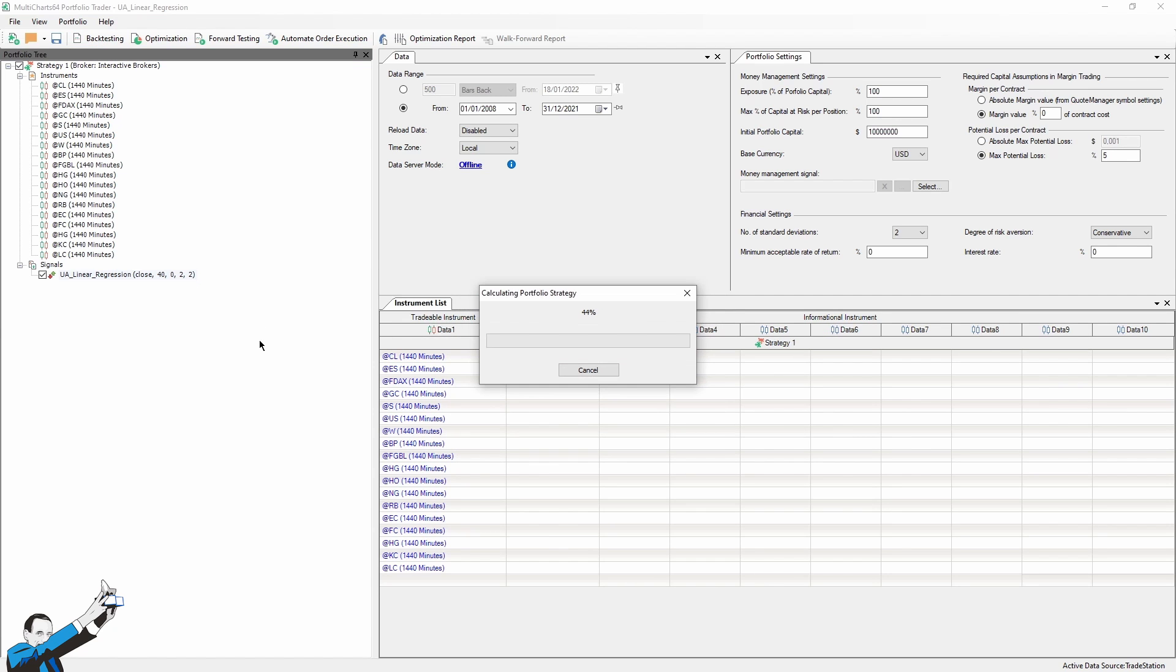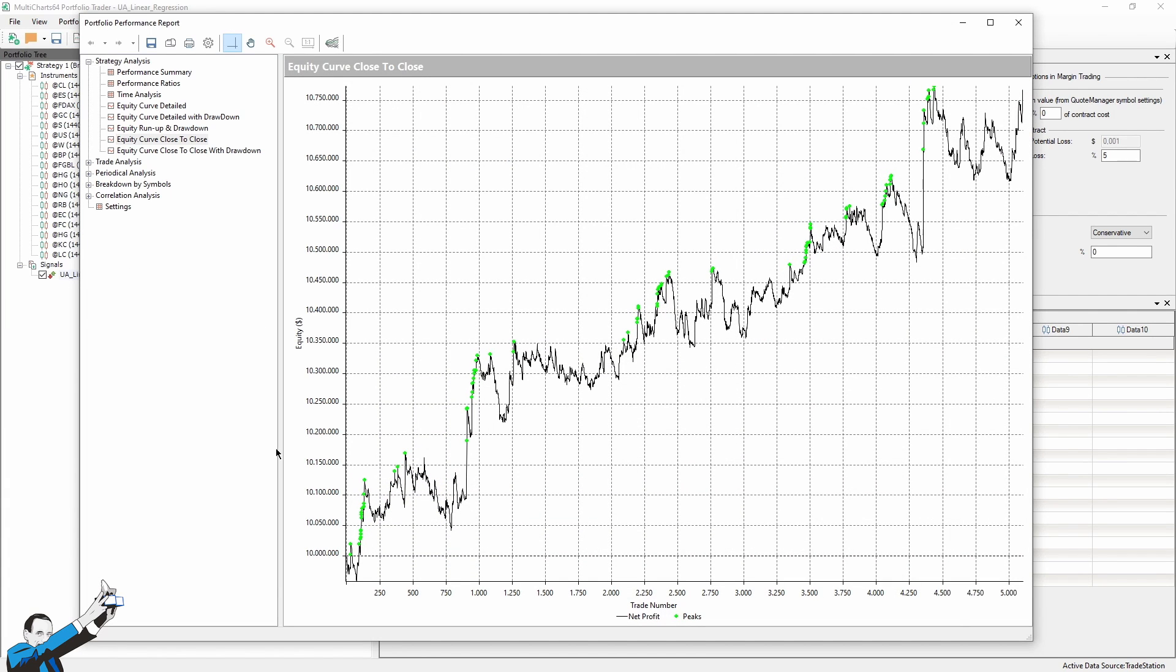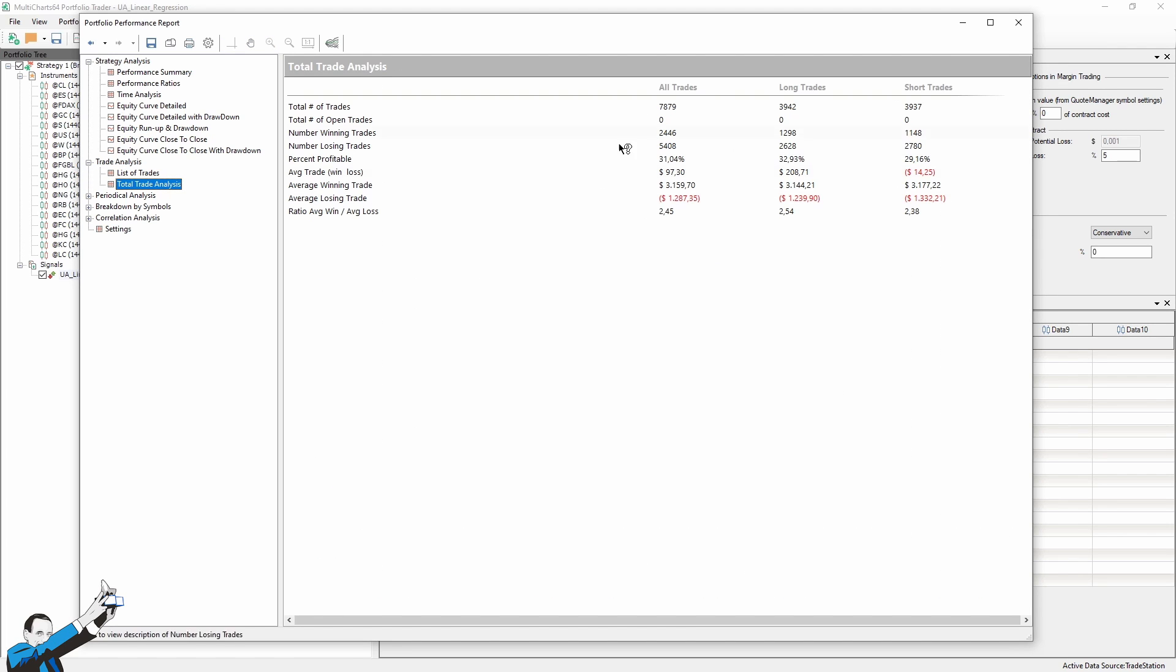Here are the results. Obviously, this is a strategy that we've already optimized because, as previously said, we've chosen the best values. But we definitely see that on this portfolio, the first results of the strategy are certainly interesting. Let's go look at the resulting average trade. We're at about $100 in 7,879 trades.